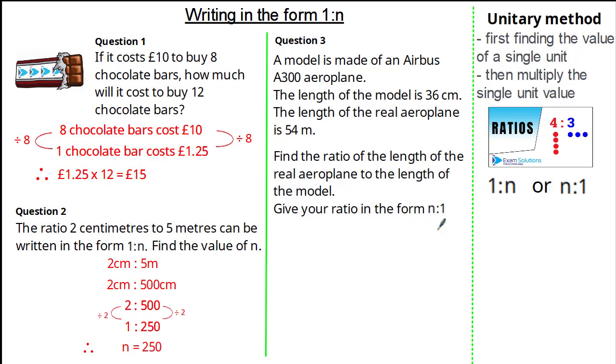Find the ratio of the length of the real aeroplane to the length of the model. We're asked to give the ratio in the form of n to 1. Now reading the question we must write the ratio correctly. We write real to model. From here we simply substitute the values given. 54 metres to 36 centimetres is incorrect. We do not write a ratio with different units. So let's make the units the same. We have 5400 centimetres to 36 centimetres. So now we can remove the units.